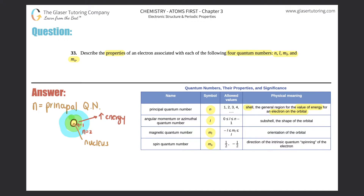N also tells you the probability of where an electron will be found — if it's n equals two, the electron probability is in the blue section; if it's n equals one, it's in the green section. Now let's move to l. L is called the angular momentum quantum number, also known as the azimuthal or secondary quantum number.